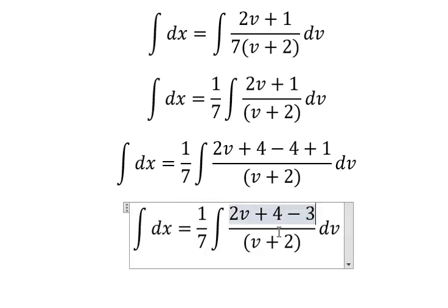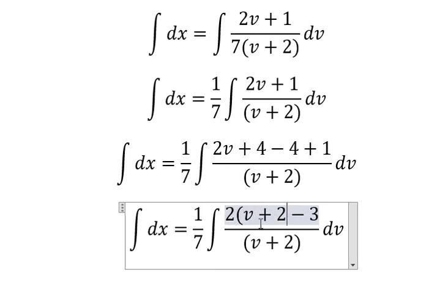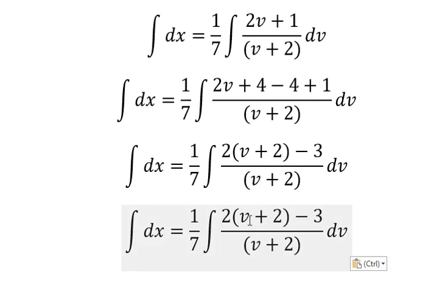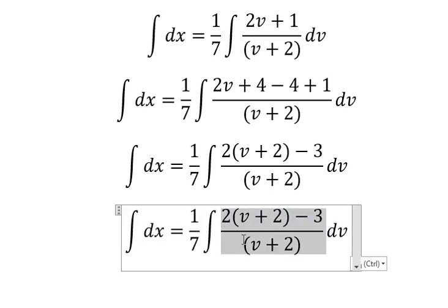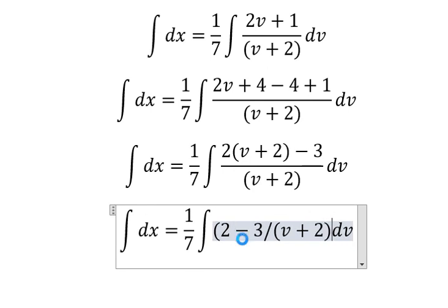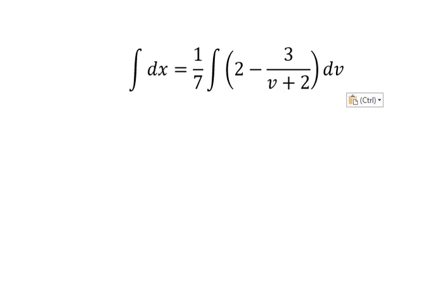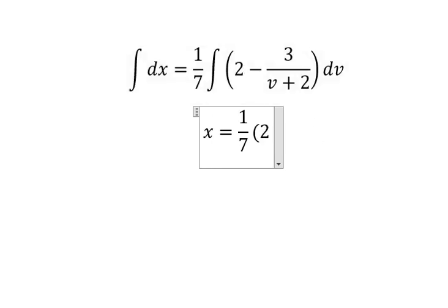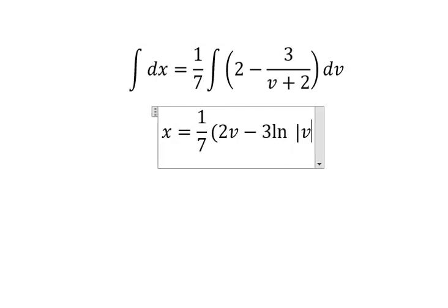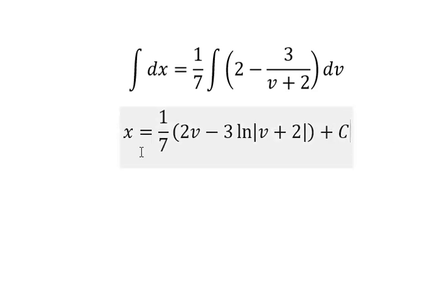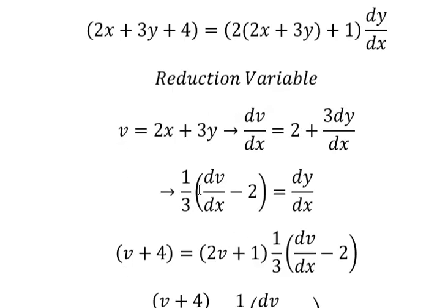This one we have negative number three — we can do factorization by number two. So v plus 2 divided by v plus 2 gives number one, and we have number two here. Now we have the final answer: the integral of x gives x, the integral of number two gives 2v, and the integral of this one gives negative three ln of the absolute value of v plus two, and we add c. For v, that is this substitution.